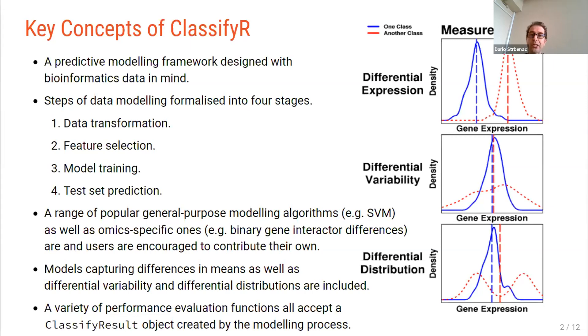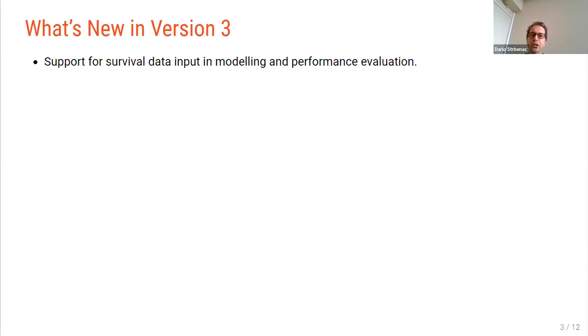And after that modeling is done, there's a variety of performance evaluation functions which all accept a classifier result S4 object that's created by the modeling process or a list of such objects. So now to tell you what's new in version 3 in a concise list. So previously, as you could guess from the name, ClassifyR only worked for classification.